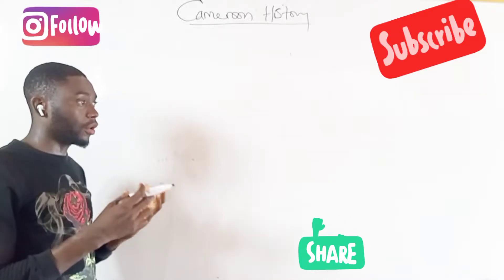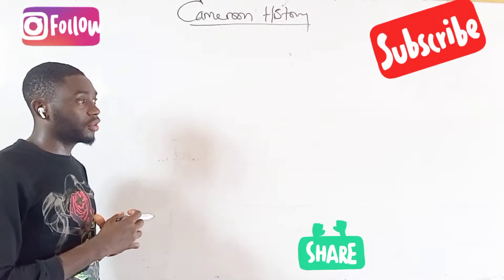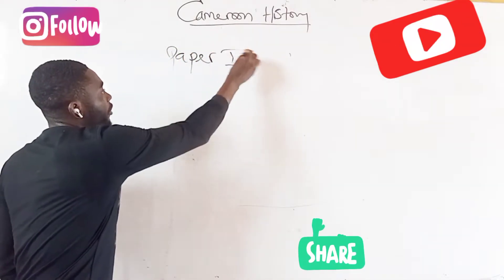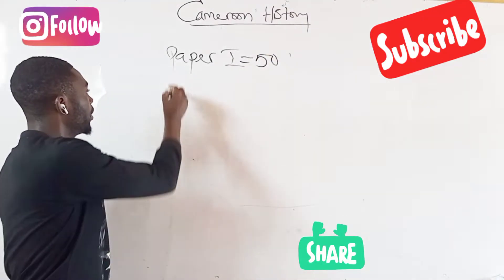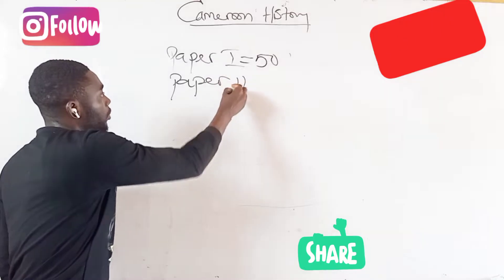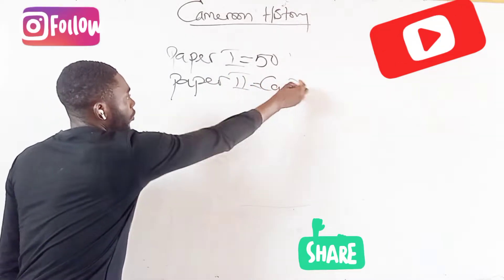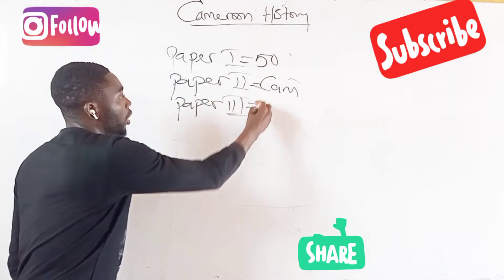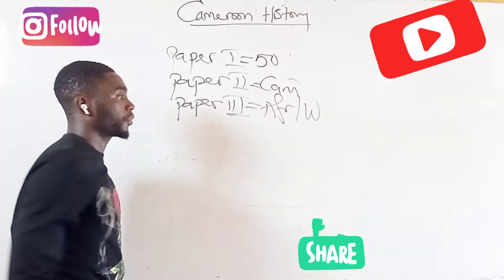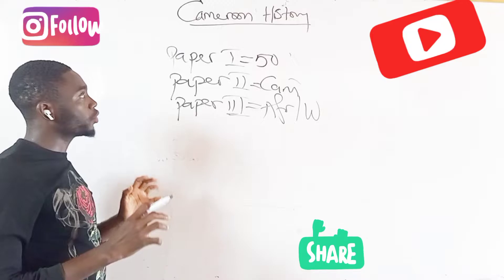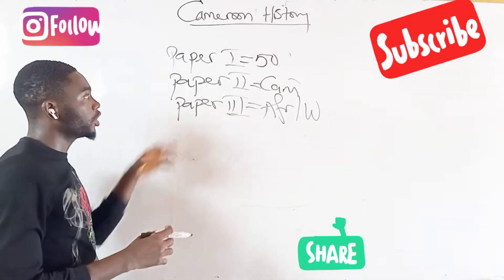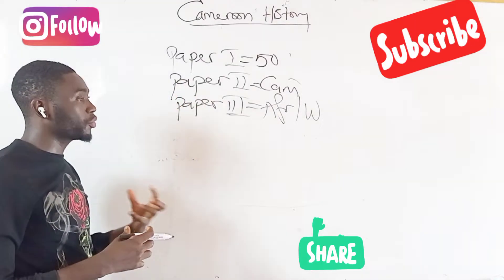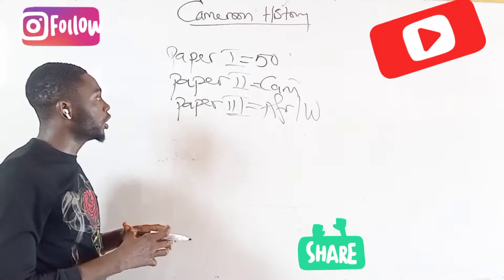We are working mostly on paper 2. Advanced level history has paper 1, with 50 multiple choice questions. Paper 2 is all about Cameroon history. Then paper 3, we talk about Africa and world history. In paper 1, 20 of those 50 multiple choice will come from Cameroon history, 15 will come from Africa history, and 15 will come from world history.